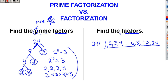Notice the difference between prime factors, 2, 2, 2, and 3, and factors, 1, 2, 3, 4, 6, 8, 12, and 24, of the number 24. So thanks for watching.